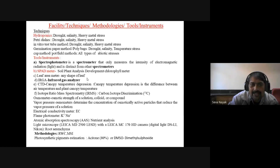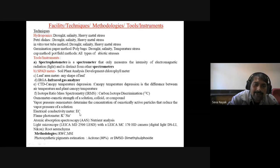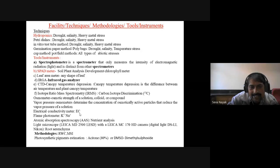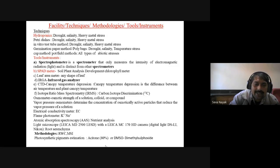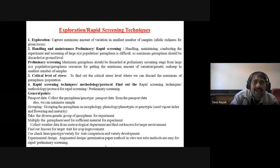Electrical conductivity (EC) meter is needed for salinity stress. Flame photometer for estimating sodium and potassium. Atomic absorption spectrophotometer for nutrient analysis. Light microscope is used for root aerenchyma studies. Methodologies include relative water content (RWC) and membrane stability index (MSI). For photosynthetic pigments: 80% acetone and DMSO methods, but the acetone method is very easy for large populations of germplasm screening; the DMSO method is difficult for large sample numbers. Rapid screening techniques: first, you need to collect diverse germplasm — exploration to capture the maximum amount of allelic diversity in the smallest number of samples.